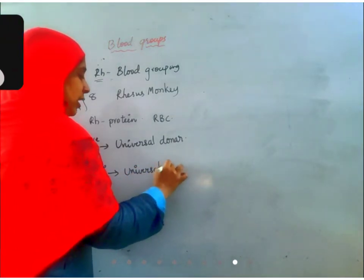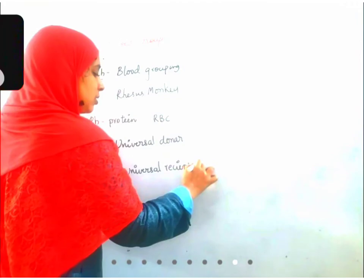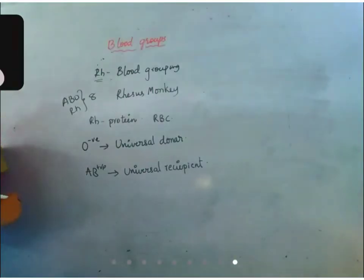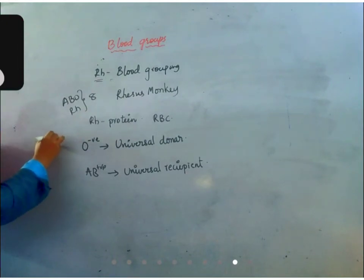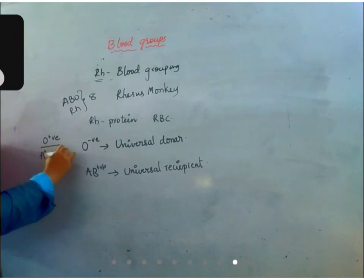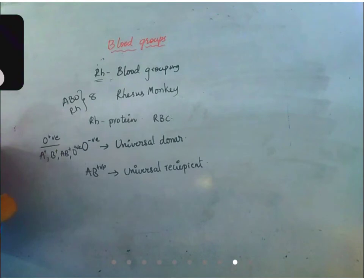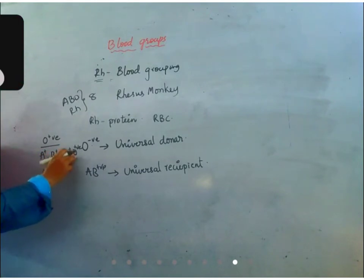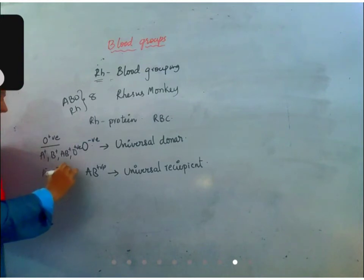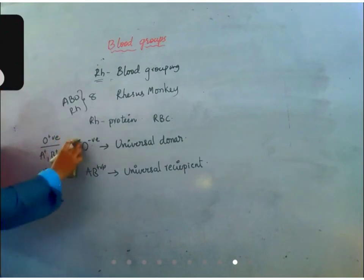If an RH negative person gives blood to an RH positive person, no antibodies will be produced — there will be no reaction. So a negative person can give blood to a positive person, but a positive person should never give blood to a negative person as it leads to agglutination. O negative is the universal donor and AB positive is the universal recipient. O positive can give blood to A positive, B positive, AB positive, and O positive. O negative can give to all positive and all negative blood groups.